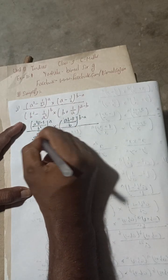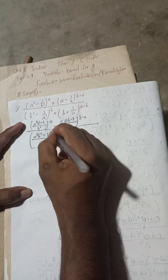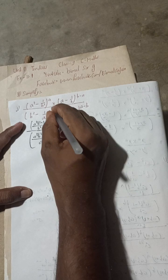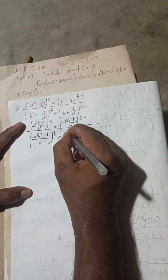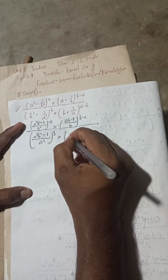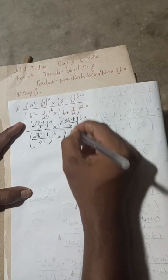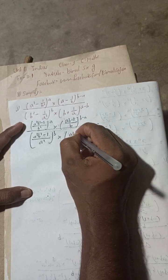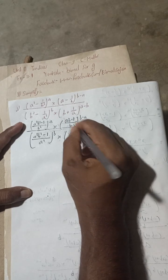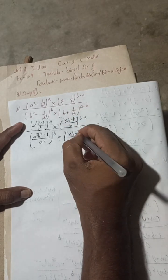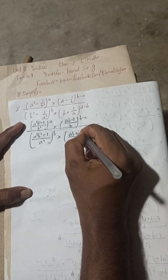Continuing the simplification — this is the formula for ab, which is (ab)² = a²b². Using the identity a²b² − 1, we apply the formula a² − b² = (a+b)(a−b).